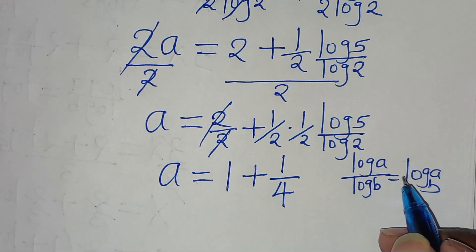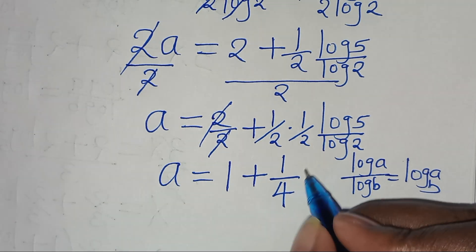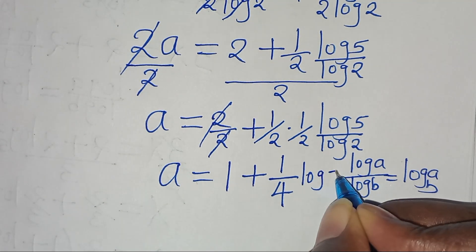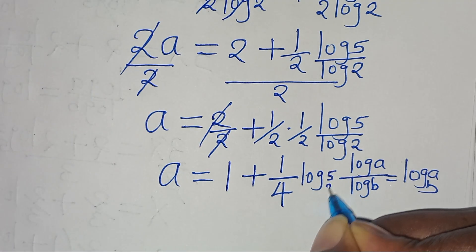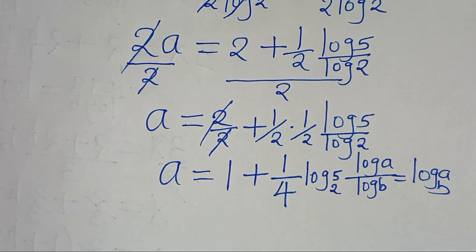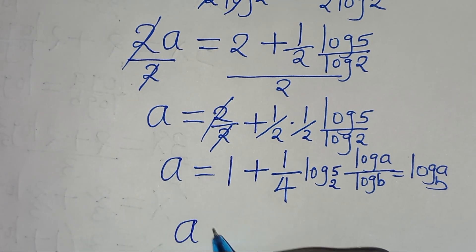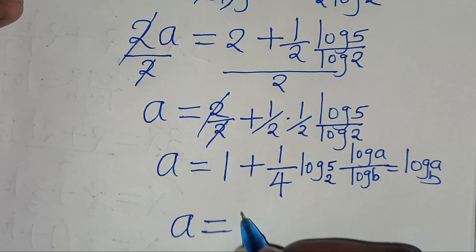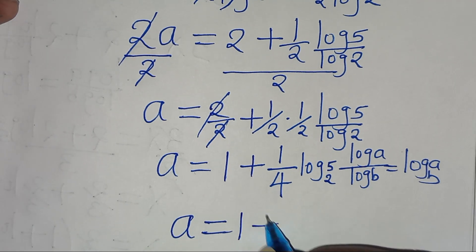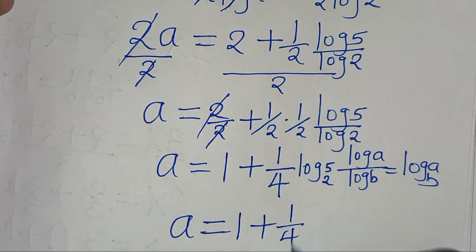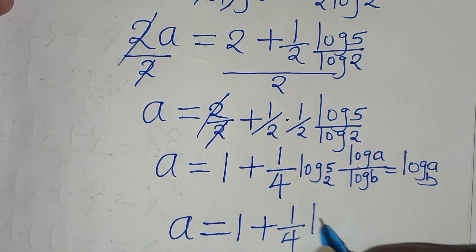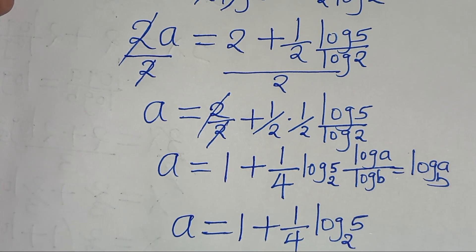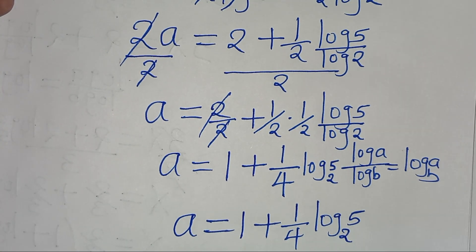Applying the change-of-base logarithm property — log 5 divided by log 2 equals log₂5 — we get a equals 1 plus one-quarter·log₂5. This is the value of a.